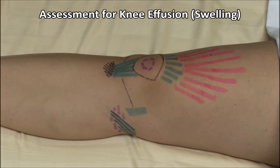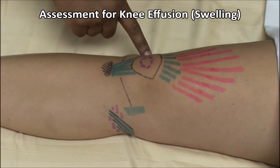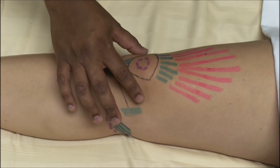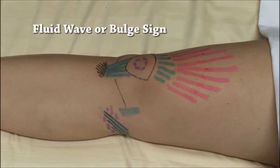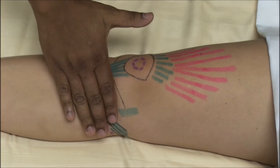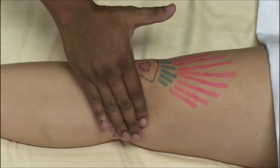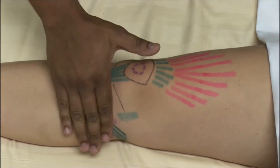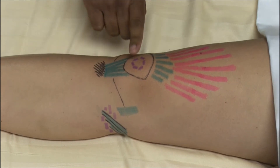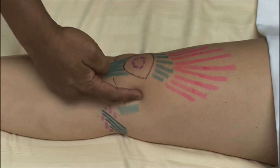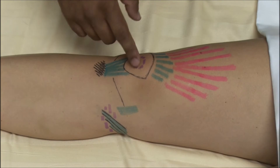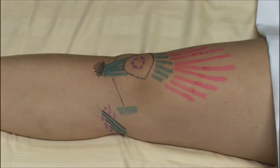Now let us palpate for a knee effusion. The medial and lateral parapatellar fossae are normally visible; if these are full, it suggests a moderate to large effusion. We will first perform the fluid wave or bulge sign, also known as the milking test. With firm pressure, sweep your hand up the medial aspect of the knee, pushing fluid laterally and into the suprapatellar recess or pouch. Then immediately sweep your hand down the lateral aspect, pushing the fluid back. Look at the medial fossae to see if a bulge forms — do not confuse this with movement of the patella or soft tissue. This test is good for small effusions; with larger effusions one may not be able to displace the fluid sufficiently to see a wave forming.